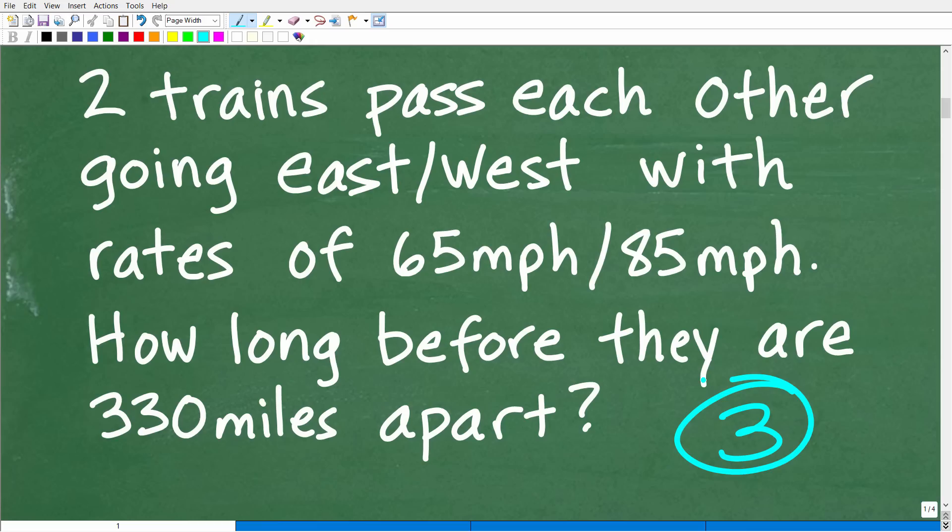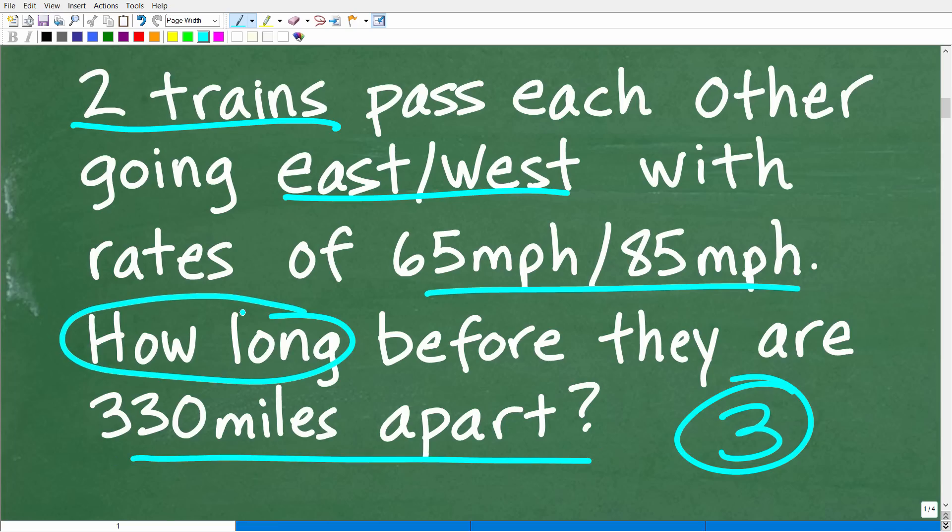And this particular problem, there's kind of a lot going on here, right? We've got two trains, one's going East, one's going West. They have different speeds and we need to figure out how long before these trains are 330 miles apart. And certainly we have to consider that they are passing one another. So what does this all mean?